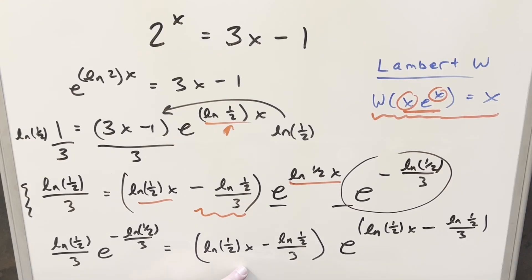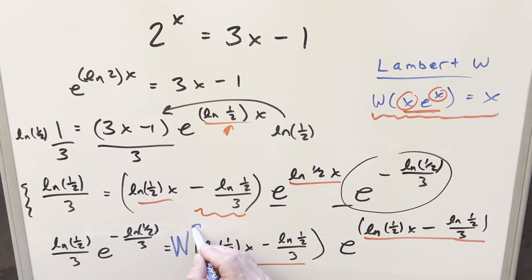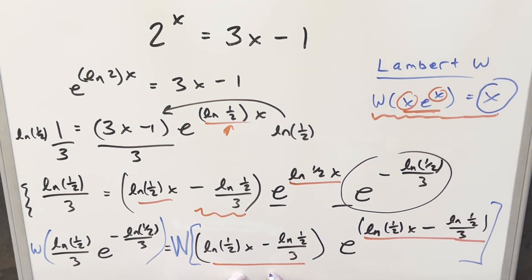Now I think we have this perfectly set up for our Lambert W function. This value here has been manipulated to be exactly the same as the exponent here. So what I'm going to do now is just take the Lambert W function on both sides. On the right side of the equation, what pops out is just the coefficient — the x part — and everything else goes away.